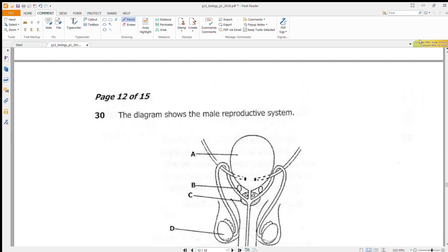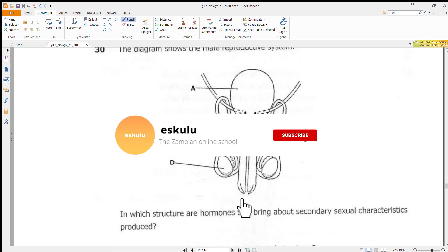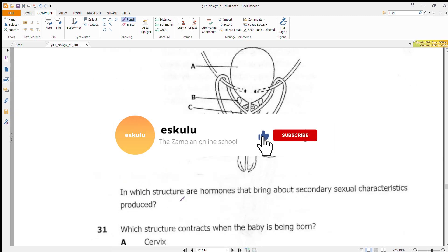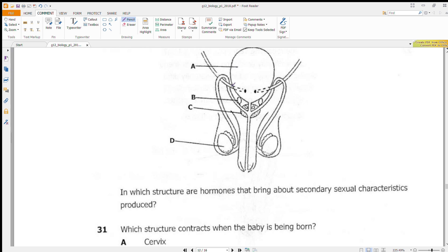Okay, we go to question 30. The diagram shows a male reproductive system. In which structure are hormones that bring about secondary sexual characteristics produced? T is the testes, we have the bladder, the penis. The hormone that brings about secondary sex characteristics is testosterone, and it is produced in the testes, which is D.